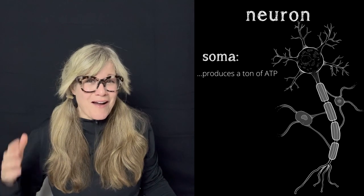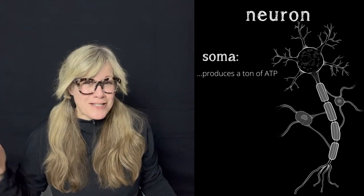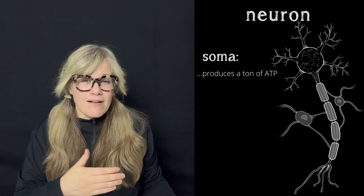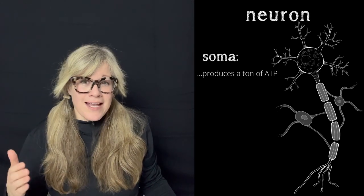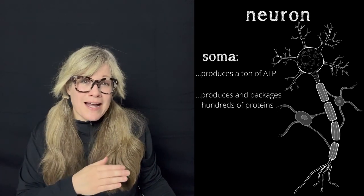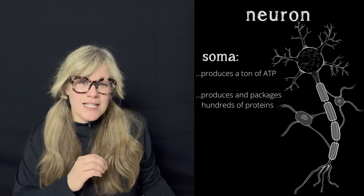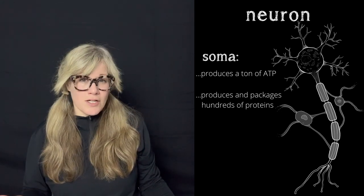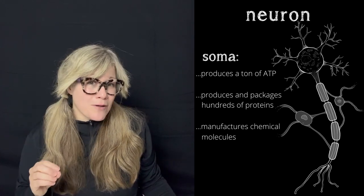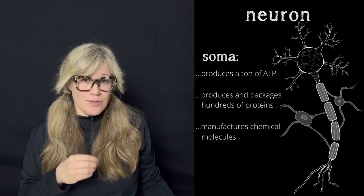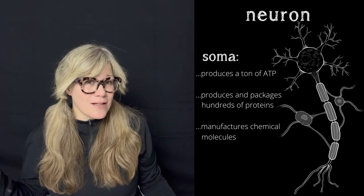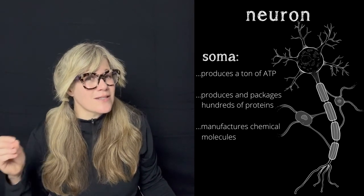Consider the amount of mitochondria needed to produce that much ATP. There is an abundance of mitochondria in a typical neuron. The cell also produces and packages hundreds of different proteins, each with its own specific supportive function. It also manufactures different types of chemical molecules that it needs to transport to the very end of the neuron, and those determine the type of signal being sent to the next neuron.